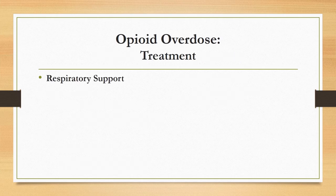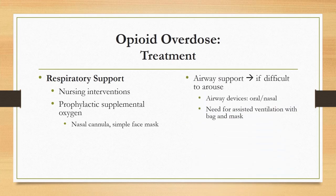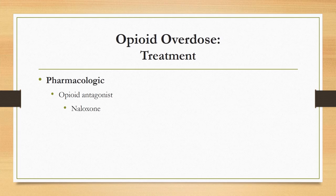If an opioid overdose is suspected, immediate attention should be paid to respiratory support. Nurses must monitor patients closely and be quick to initiate nursing interventions that encourage respiration and ventilation. Prophylactic supplemental oxygen should not be delayed; nurses should place patients on nasal cannula or simple face mask while assessing the need for oral or nasal airway devices and assisted ventilation with bag-mask technique. Assistance from higher-level providers should not be delayed, and invasive airway management via intubation should be anticipated, especially in the presence of excessive secretions or vomitus. Treatment should also include consideration of naloxone.